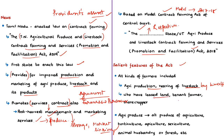Farmers who have leased land, tenant farmers and sharecroppers are also included under the act. The term 'agriculture produce' includes all produce of agriculture, horticulture, apiculture, sericulture, animal husbandry, or forest or any other such activity identified for contract under this act. Horticulture deals with garden crops such as fruits, vegetables and ornamental plants. Apiculture is the scientific method of rearing honeybees.